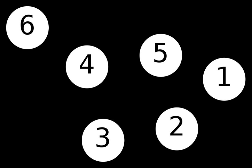A regular graph is a graph in which each vertex has the same number of neighbors, i.e., every vertex has the same degree. A regular graph with vertices of degree K is called a K-regular graph or regular graph of degree K.